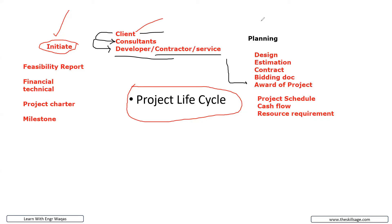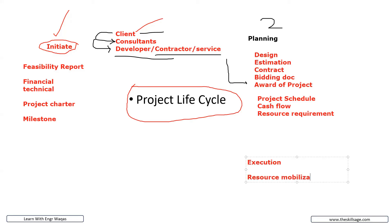The third phase is the execution phase — this is the practical phase where work actually starts. The major activity is resource mobilization: your crane, site engineers, chemical engineers, civil engineers, and all required staff move to the site. You set up caravans and temporary buildings and facilities so that you can stay on site and continue work.